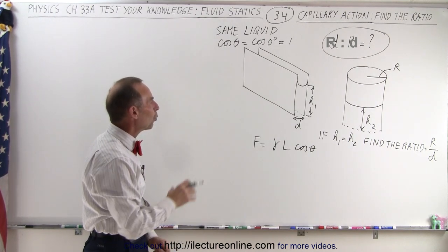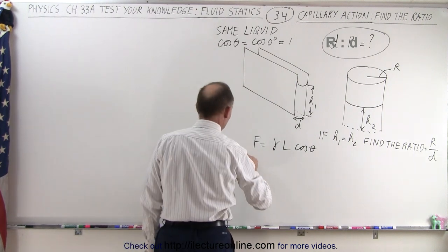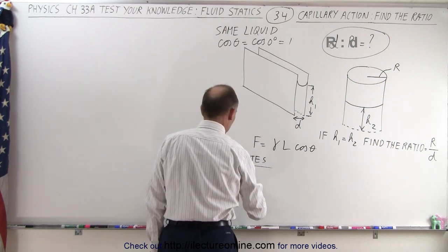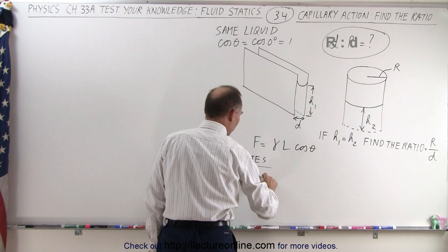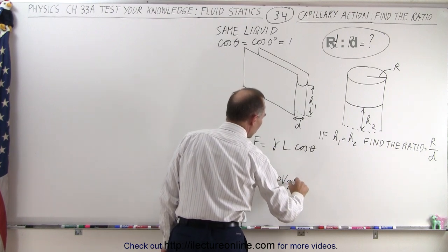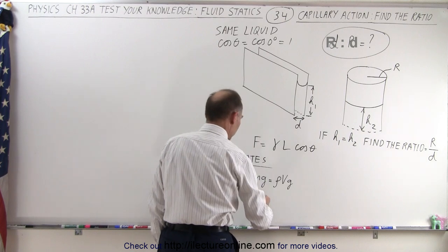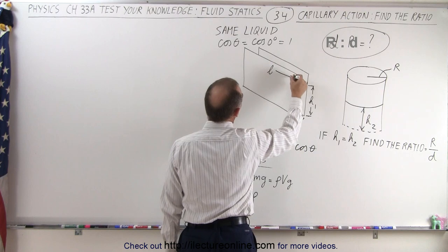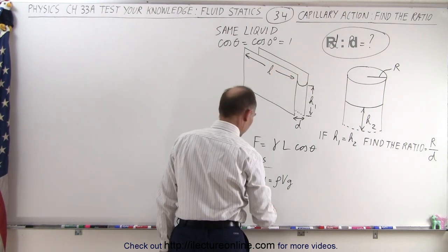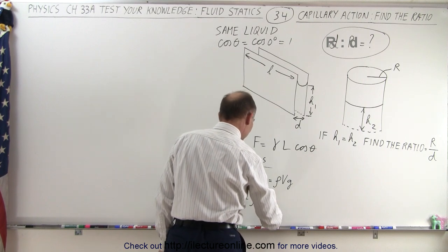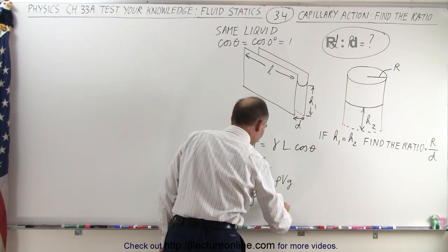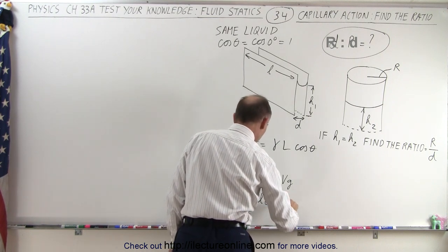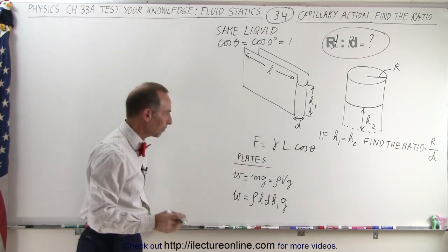Now let's find the weight for the plates. The weight W equals Mg, which equals rho times V times g. For the plates, that is the density times the length L times the distance D times the height H1, all times g. That's the volume times g — the weight of the liquid drawn up by capillary action between the plates.